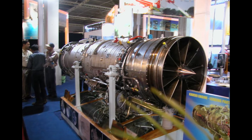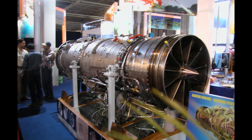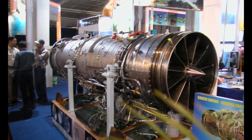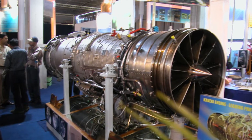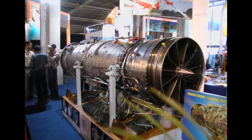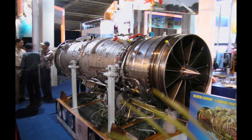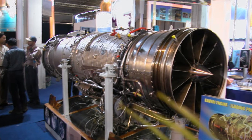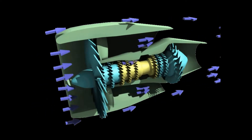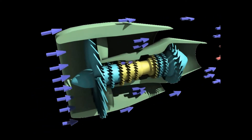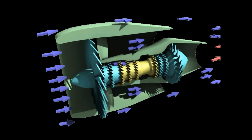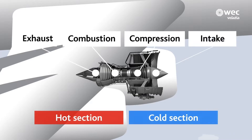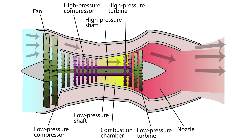The Kaveri engine, developed by India's Defense Research and Development Organization, DRDO, represents a significant effort to produce an advanced domestic turbofan engine. Despite the ambition and technological advancements involved, the Kaveri project has encountered numerous engineering challenges. This article provides a detailed analysis of these challenges, exploring the technical concepts and issues that have influenced the development and performance of the Kaveri turbofan engine.